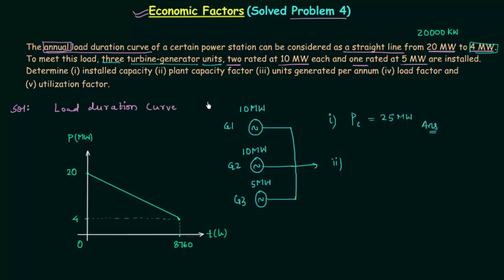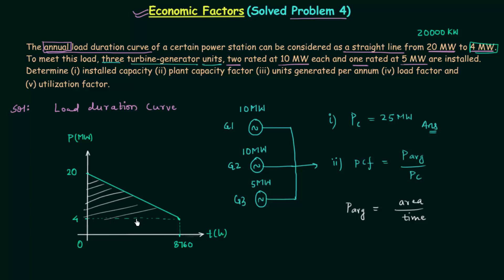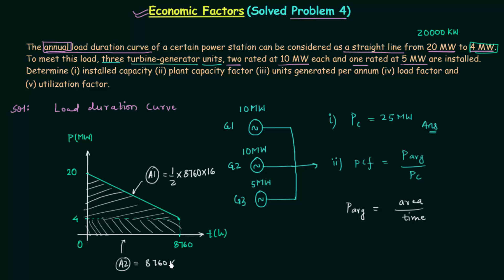In the second part, we need to calculate the plant capacity factor (PCF), which equals average power divided by installed capacity. We calculate average power using the load duration curve: average power = total area under the curve divided by total time. The total area is split into a triangle (A1) and a rectangle (A2). Area A1 = ½ × 8760 × (20 − 4) = ½ × 8760 × 16. Area A2 = 8760 × 4.